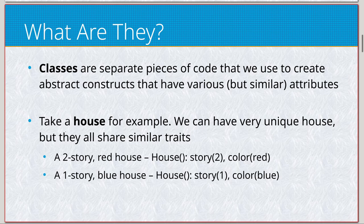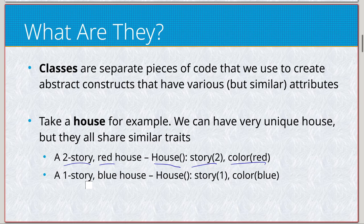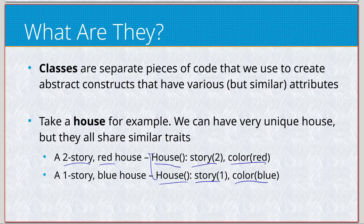An example I use here is a house. We can create a bunch of different houses — if you go to a suburb, you'll see lots of houses that are all very similar but different in their own way. Here we have a two-story house that's red: house, story two, color red. And a one-story house that's blue: house, story one, color blue. This would be the shared class they extend, with the different attributes set during construction. We can set these later or during initialization if we define a constructor that takes in those attributes.